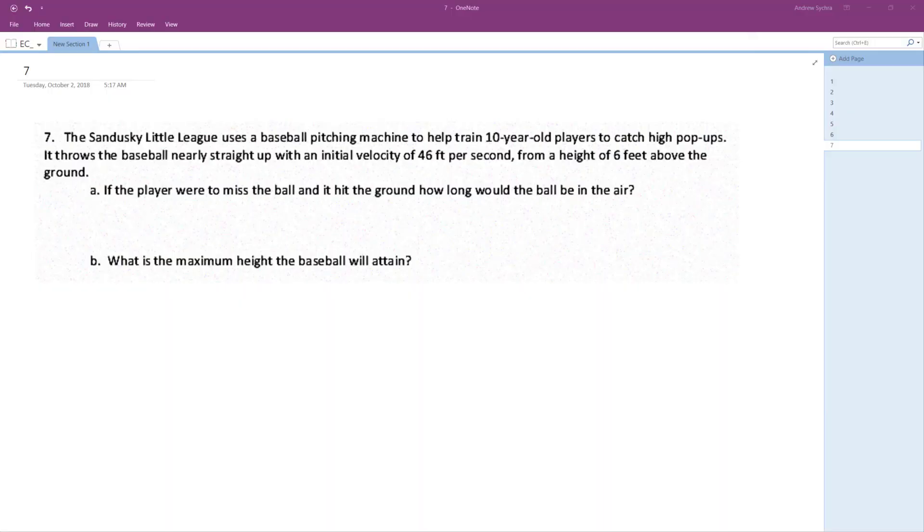The Sandusky Little League uses a baseball pitching machine to help train 10-year-old players to catch high pop-ups. It throws nearly 46 feet per second from a height of 6 feet. If the player were to miss the ball and it hit the ground, how long would it take to hit the ground?